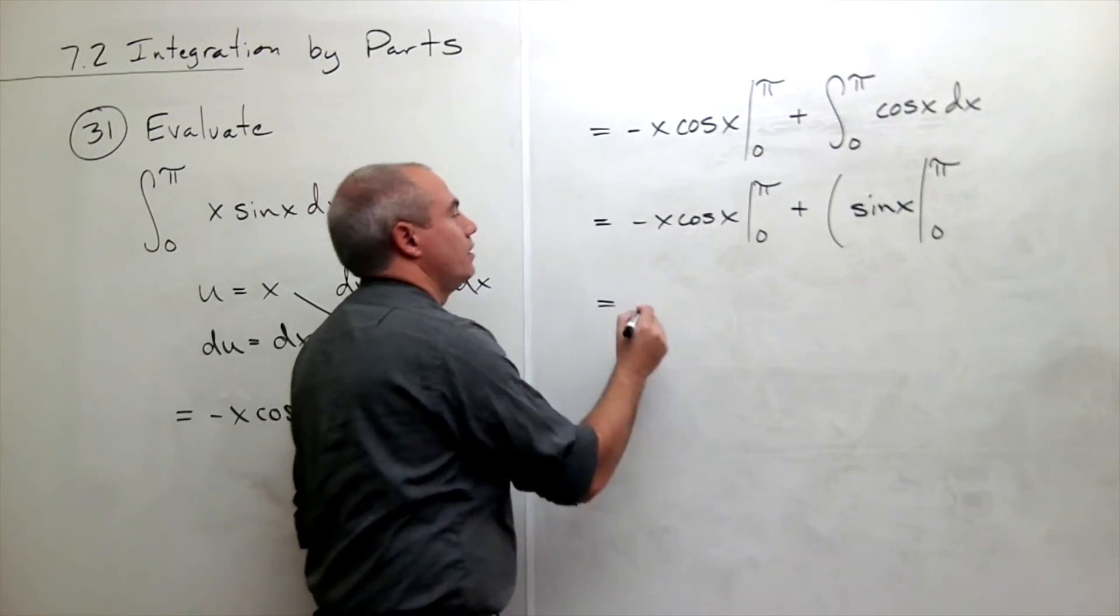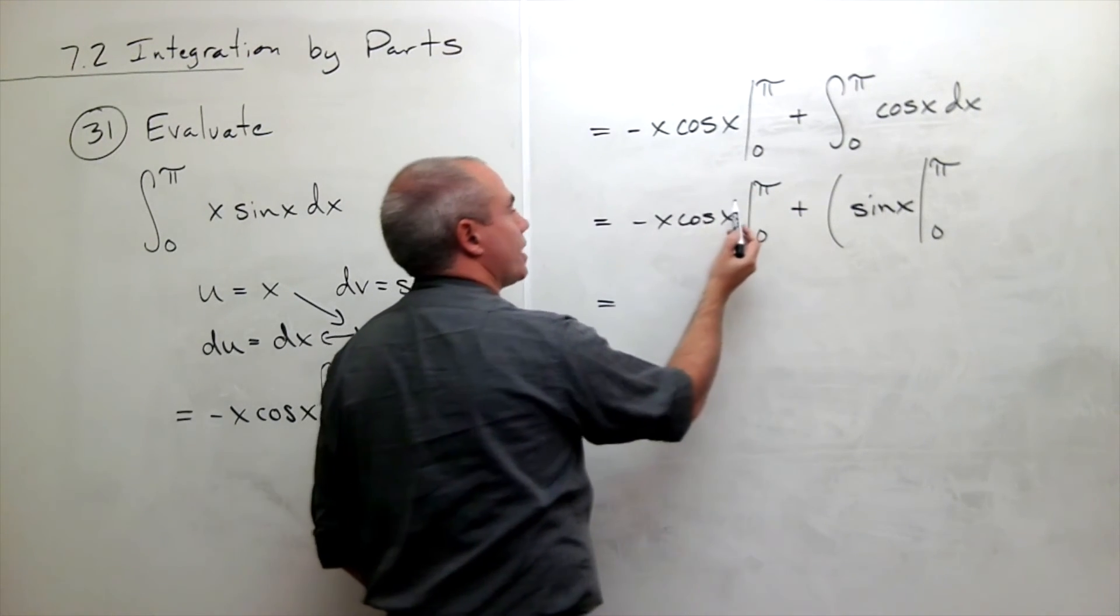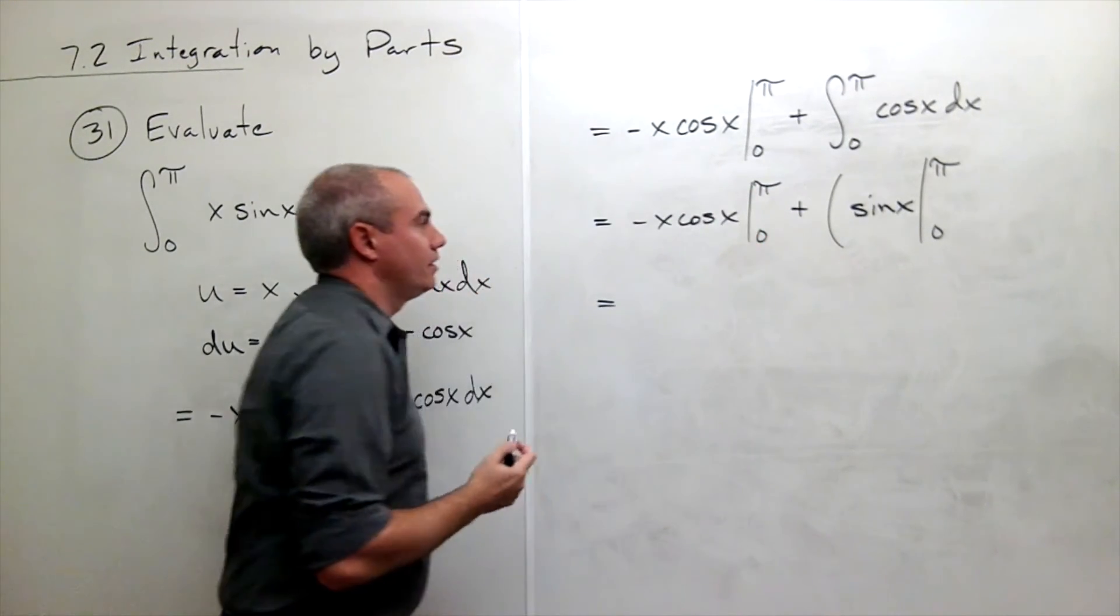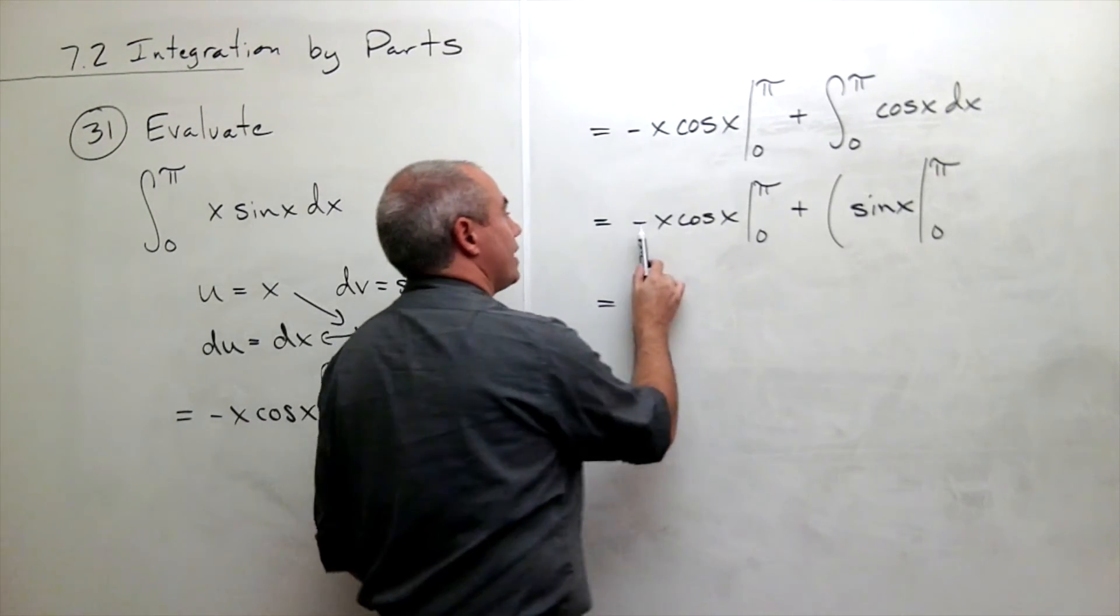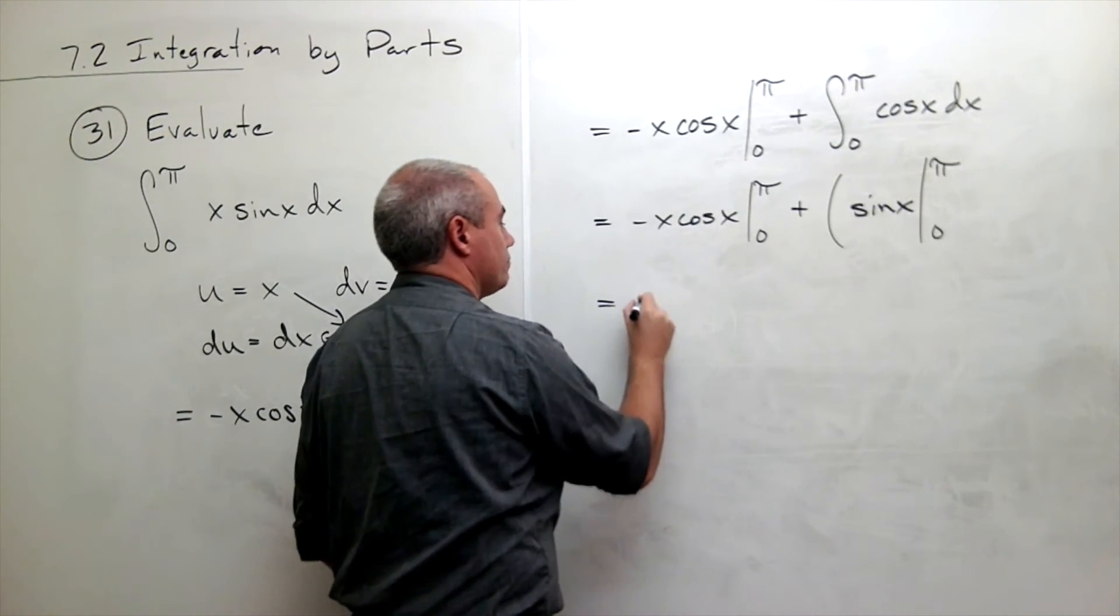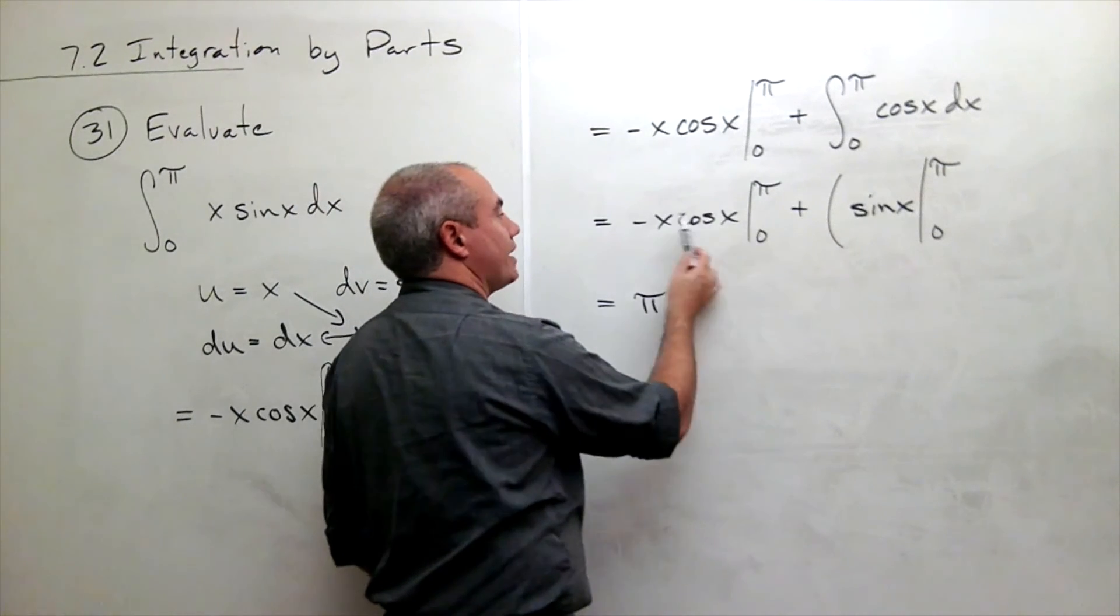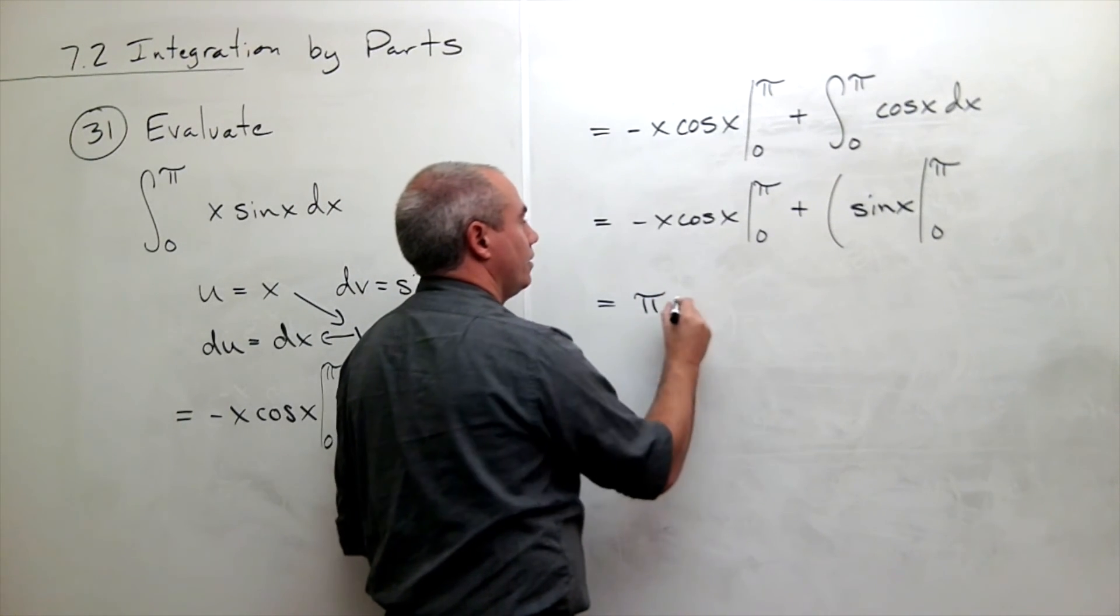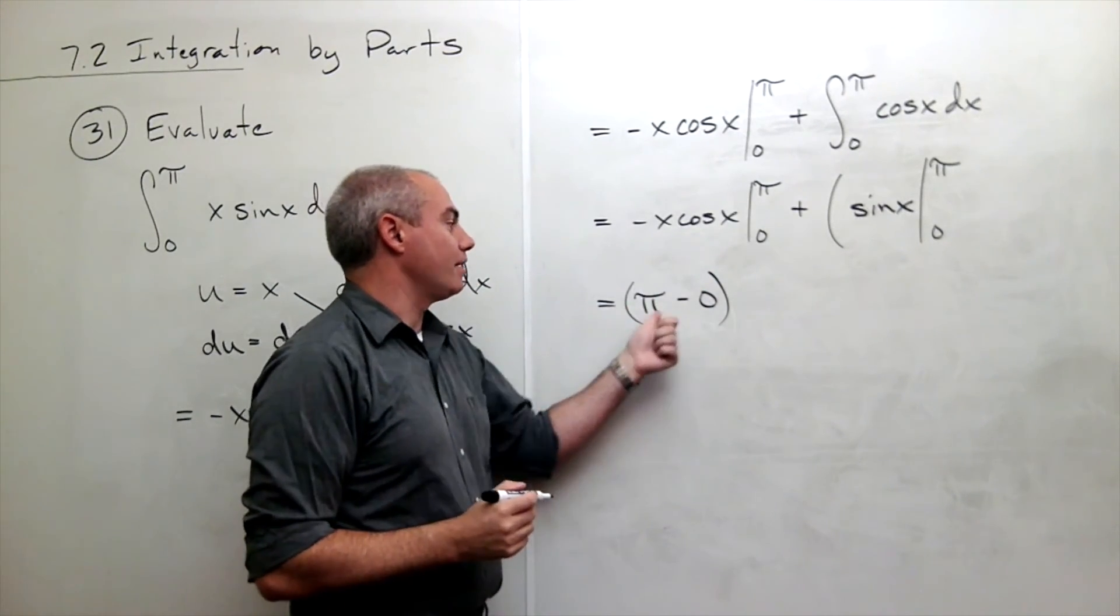Let's plug things in. If I plug in pi here, I get negative pi times cosine of pi. Cosine of pi is negative 1. So I get negative pi times negative 1, which is pi. Then if I plug in 0, I get 0 times something, which is minus 0. So this guy is pi minus 0.